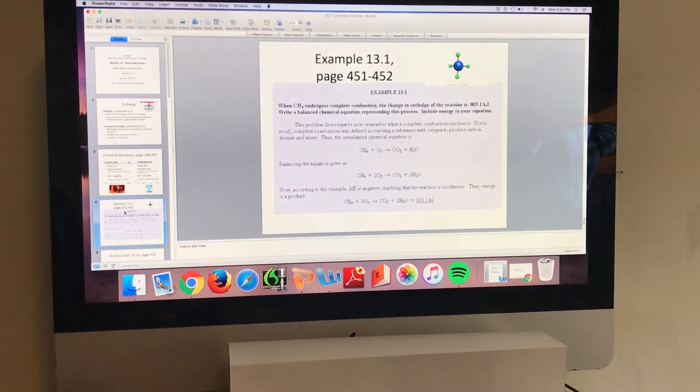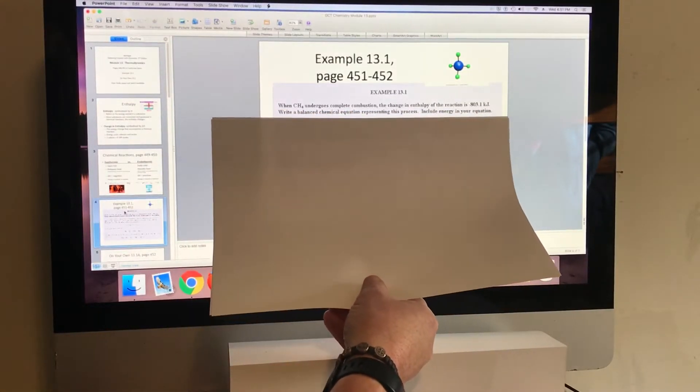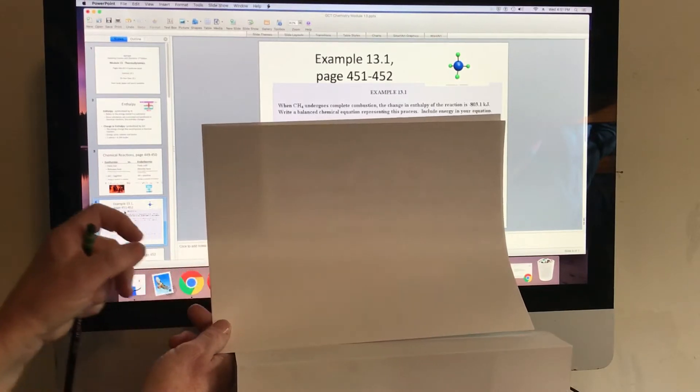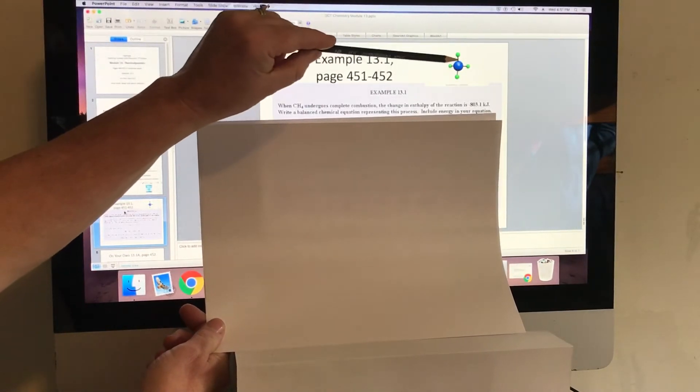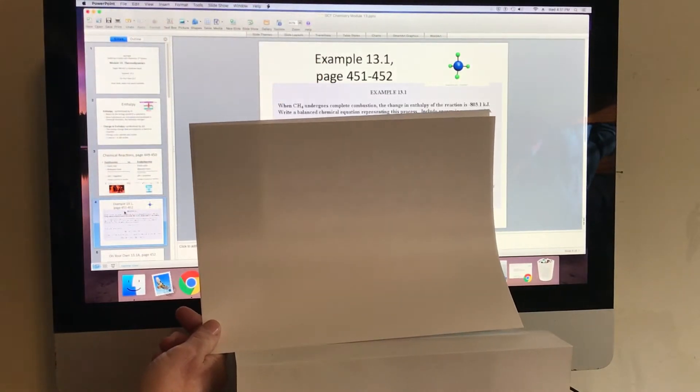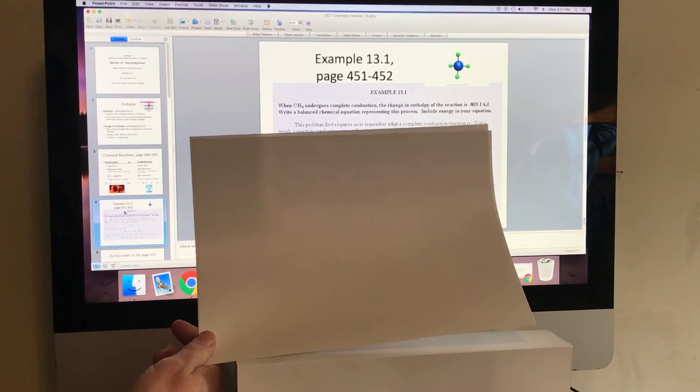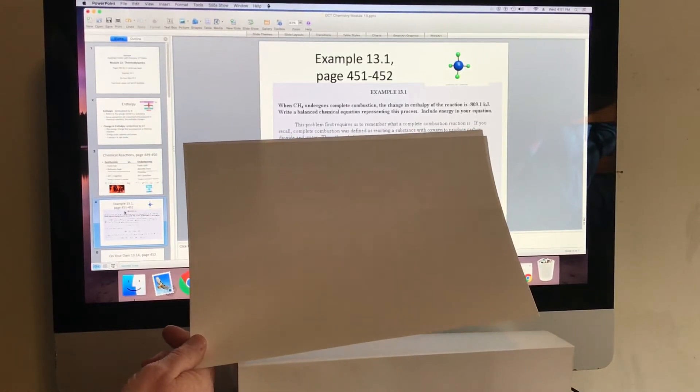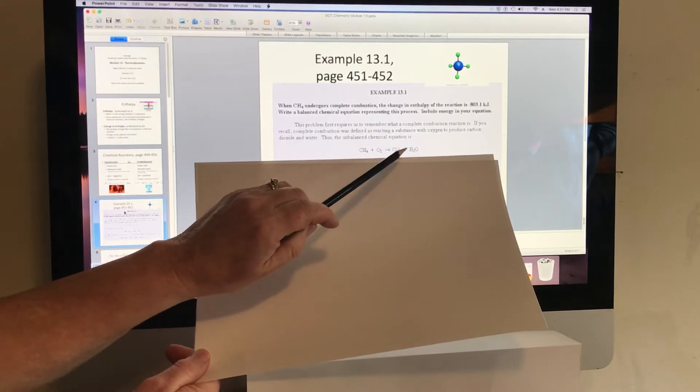So let's move on to example 13.1. I'm on the bottom of page 451 into 452. In this example, we have CH4, which is methane, undergoes complete combustion. And that change of enthalpy in this reaction is a negative 803.1 kilojoules. So this is a model of methane. We have the carbon in the middle with the hydrogens on the outside. It says write a balanced chemical equation representing the process. First they're reminding us what complete combustion is. That's the addition of oxygen that eventually would produce carbon dioxide and water. So our unbalanced equation in this situation would be the methane plus the oxygen yields carbon dioxide and water.